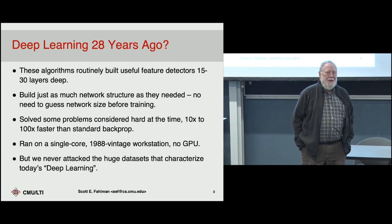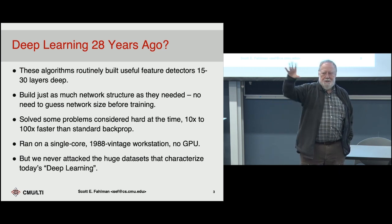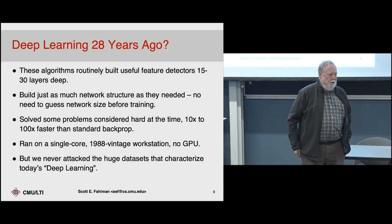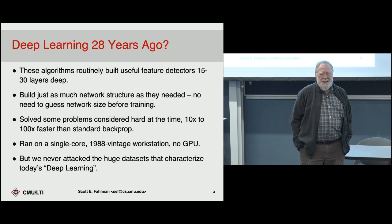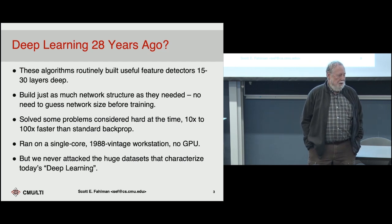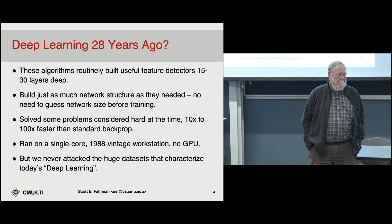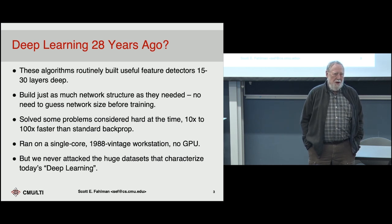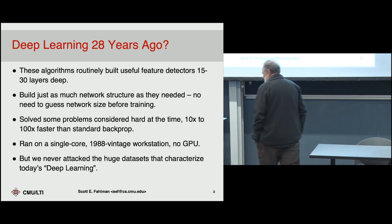These things were still too slow and you still had to guess the size and shape of the network. It's even worse now because you have to decide how many convolutional layers, merging layers, and so on. Even when it was simple layers of feed-forward units, there was just no theory to help you guess the right size. There still is not a good theory that will tell you what size network to use. People get a network that's much huger than they need.